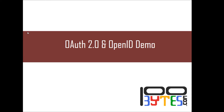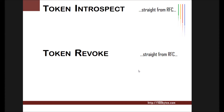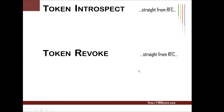Whenever a token is issued, there has to be an option for the entities to verify the token and to revoke the token. OAuth 2.0 provides the standard to introspect the token issued by the authorization server and to revoke it. In this video we will see about both token introspection and token revocation.